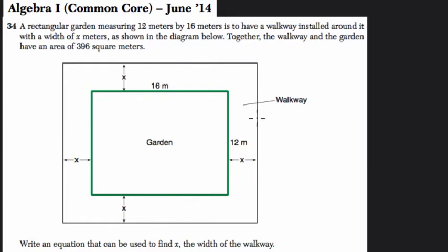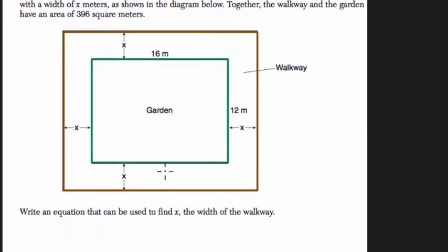It's to have a walkway installed around it. So this white space around it is the walkway. We'll use brown for that, and this is the border of the walkway. With a width of x meters. Oh, so here's the width, x by x by x by x. So all around is the same. It's x meters wide, as shown in the diagram below. Together, the walkway and the garden have an area of 396 square meters.